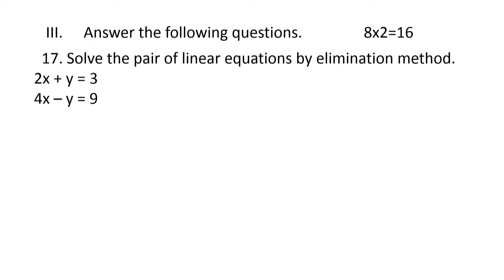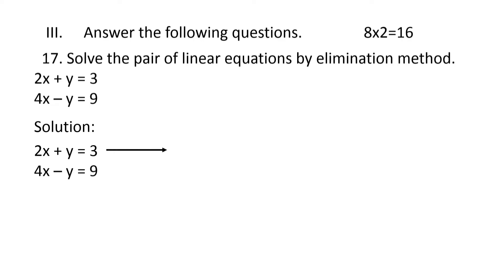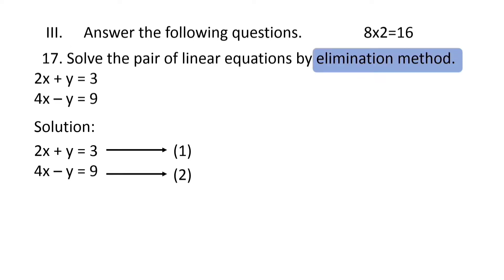The 17th question is: solve the pair of linear equations by elimination method. The equations are 2x plus y is equal to 3, and 4x minus y is equal to 9. The given equations are: 2x plus y equals 3 (equation 1) and 4x minus y equals 9 (equation 2). We have to solve it by elimination method.